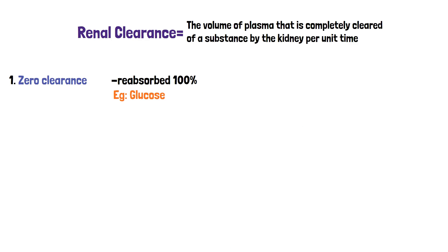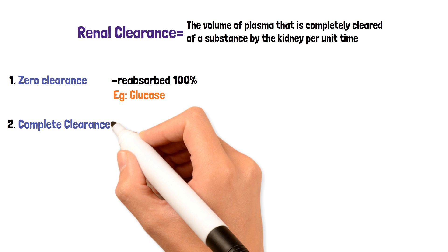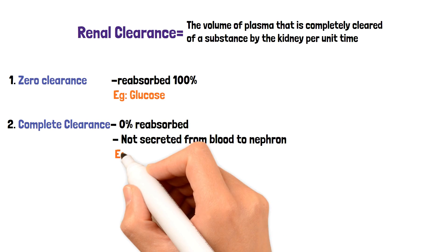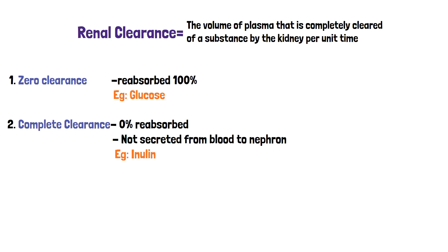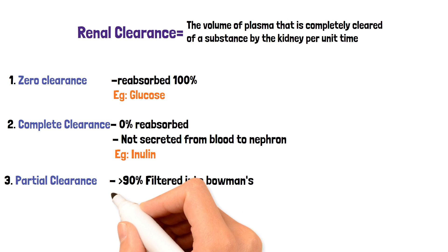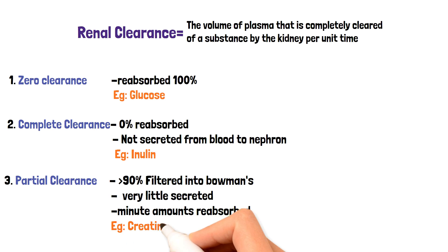Complete clearance is when a molecule is freely filtered but is not reabsorbed nor secreted from the blood to the nephron — for example, inulin. Partial clearance is when a majority of the molecule is filtered into the Bowman's capsule, but very little is secreted and minute amounts are reabsorbed — for example, creatinine.